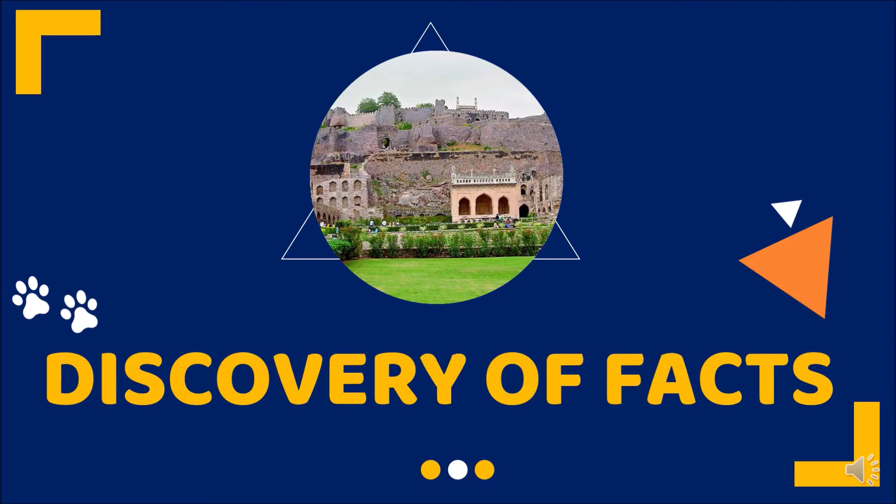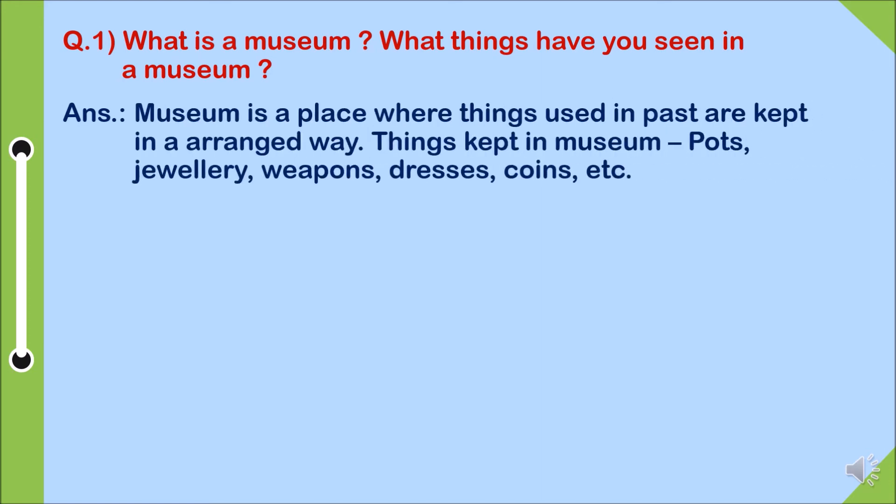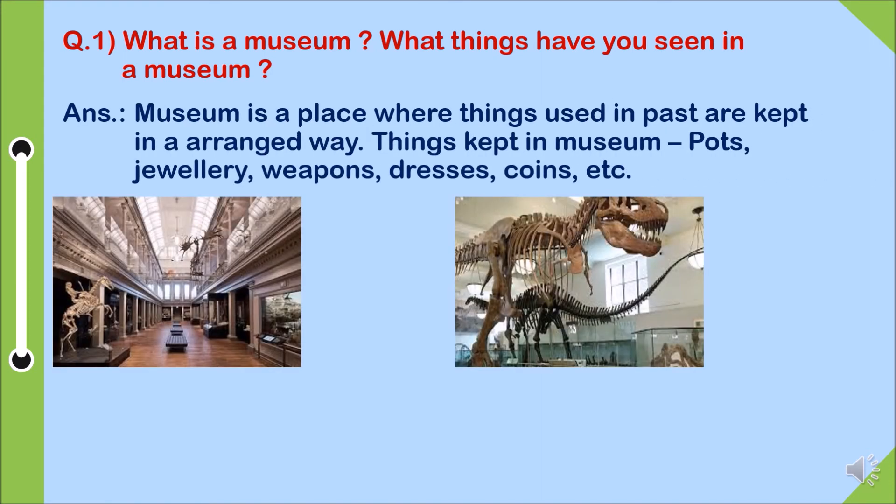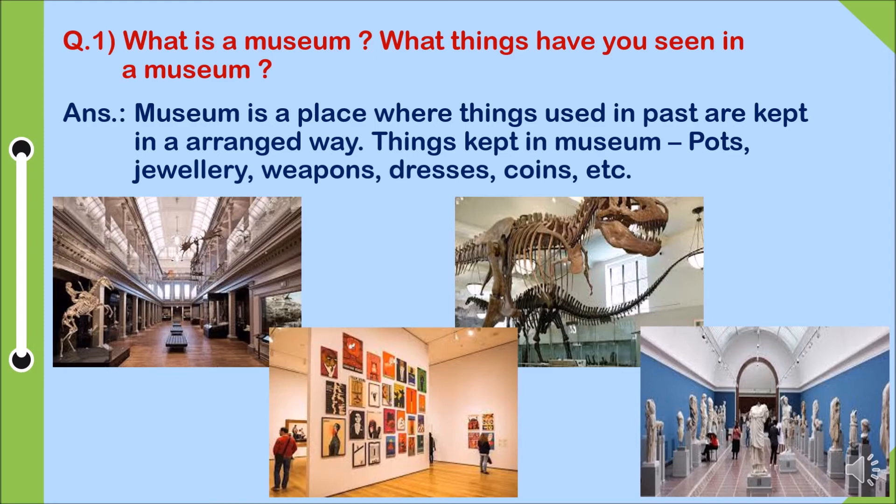Next, Discovery of Facts. Question one, what is a museum? What things have you seen in a museum? Answer: museum is a place where things used in the past are kept in an arranged way. Things kept in museums include pots, jewelry, weapons, dresses, coins, etc.